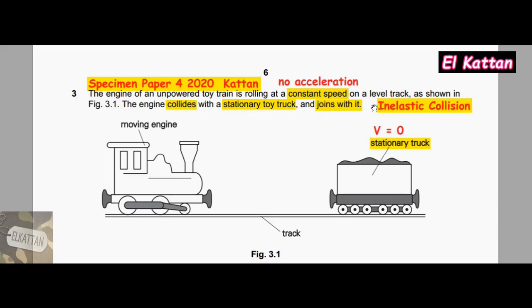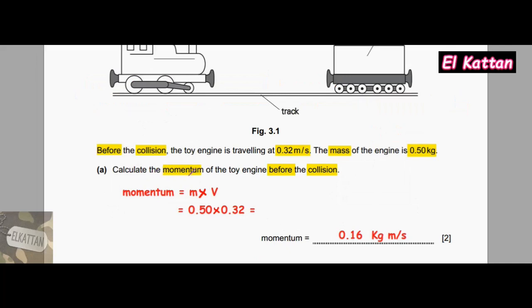It's a type of inelastic collision where the engine and stationary truck, after collision, join together. Part (a): Calculate the momentum of the toy engine before the collision.